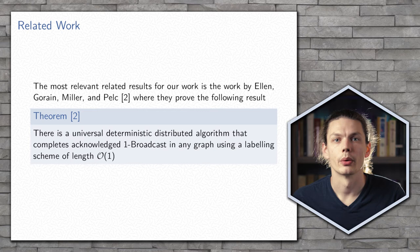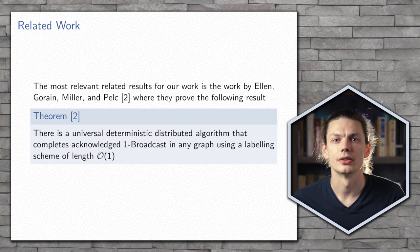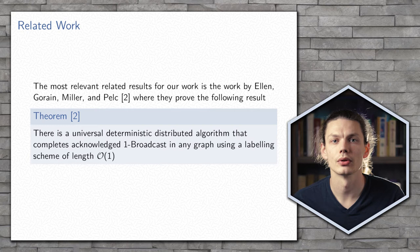Various work has been done in the radio network model and variations of it, as well as on different problems. But the most relevant right now is the work done by Ellen, Gorn, Miller, and Pelk, where they showed that the acknowledged broadcast problem can be completed using labels of a constant size.